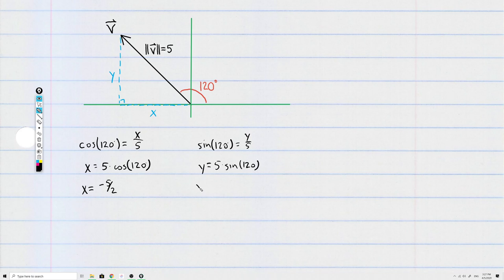Consult your unit circle, use your calculator, use your memory. The sine of 120 degrees is the square root of 3 over 2, so that means y is 5 square root of 3 over 2.